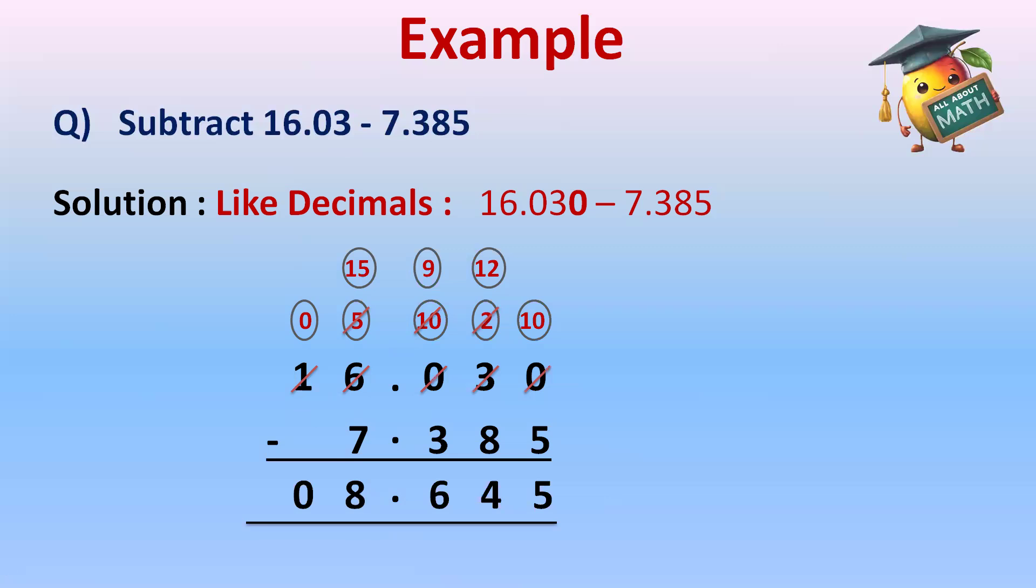It's just like addition we have done. You just need to convert the decimal numbers into like decimals and then do the subtraction like we do the subtraction of whole numbers. But remember, you have to line up the decimals in a single column.